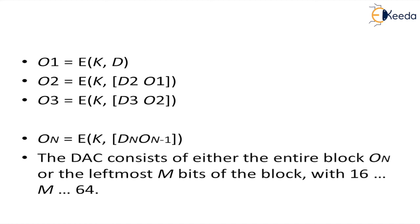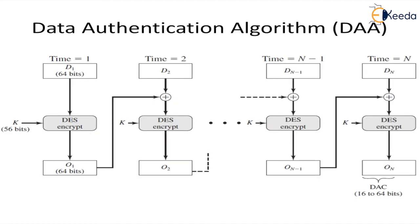DAC consists of either the entire block On or the leftmost m bits of the block with 16 less than or equal to m less than or equal to 64 bits. This is a very simple structure of the operation of the data authentication algorithm.